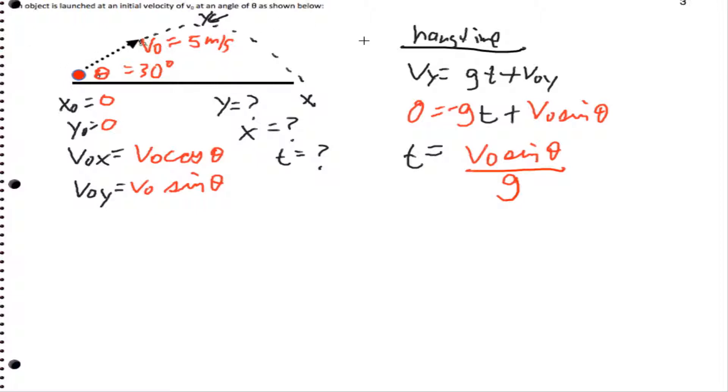Now this is half the time because that's the time going up. What I'm going to do is I'm going to actually double this time, so time total ends up being 2 v0 sine theta divided by g.